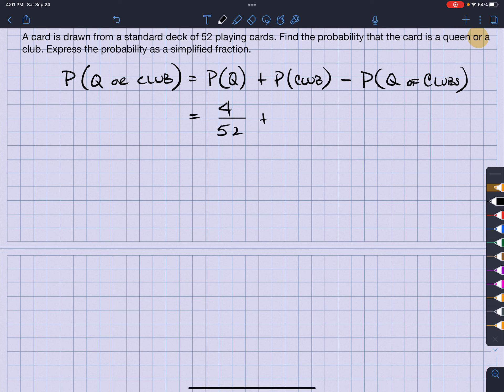How many clubs are there? Well, there's ace of clubs all the way to king of clubs. So that means there's 13 clubs out of the 52. Minus how many queen of clubs are there? There's going to be only one out of the 52, right?